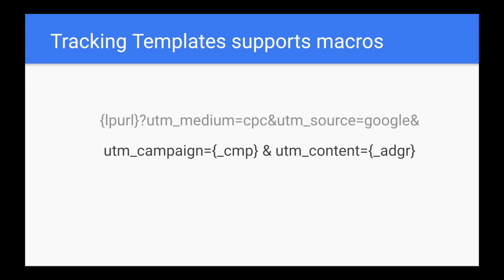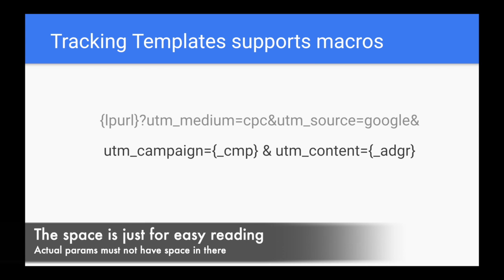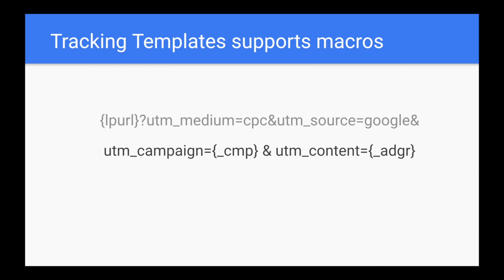Tracking templates support macros. You can set up the tracking template on account level, and you'll see curly brackets with underscore CMP — that stands for campaign in my example — and on the right, underscore ADGR, which as you can guess stands for ad group. So I set up how it should be, and then I can define CMP and ad group on a campaign and ad group level without copying this tracking template. In short, I put it on account level, then go to each campaign and only set up the CMP value — nothing else, no final URLs, no UTM parameters pushed manually. They are applied automatically.